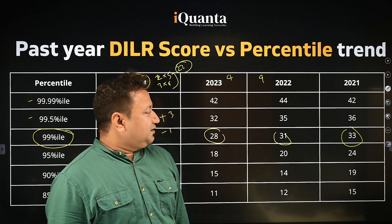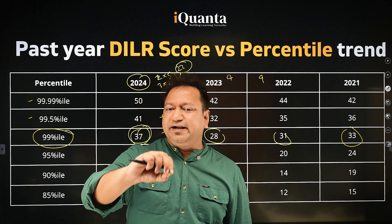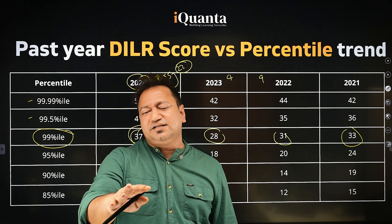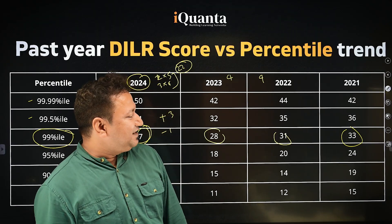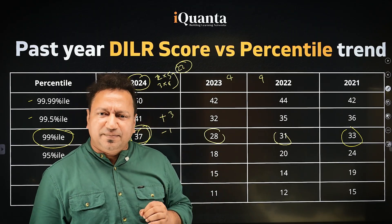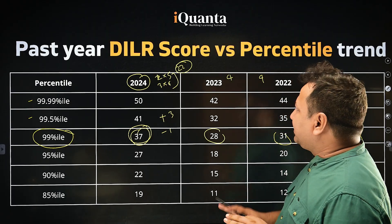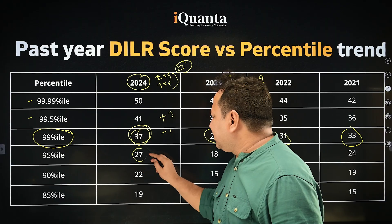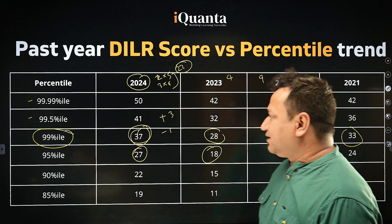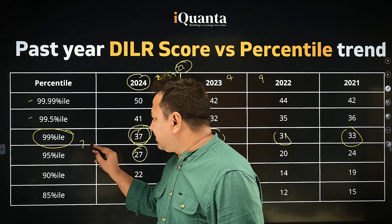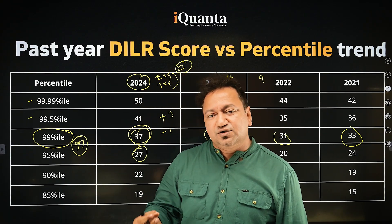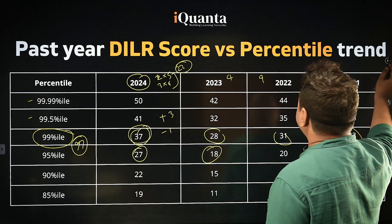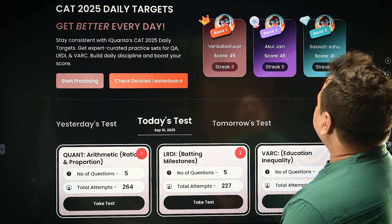Even if you attempt just 50 percent of the LRDI section correctly, you will be in the top one percent of test takers in India. For those who are not strong at LRDI, this is also good news: even solving 40 percent of the paper correctly — around eight to nine questions out of 20 — you would obtain the 95th percentile. Anything between 96th and 97th percentile can be obtained by solving 40 percent of the paper correctly.